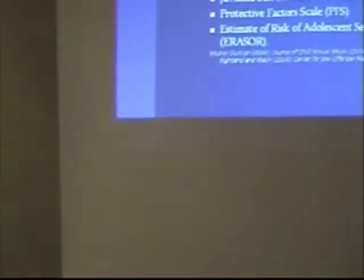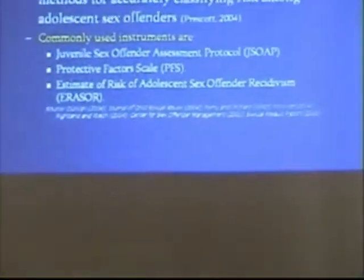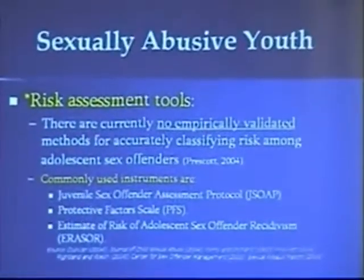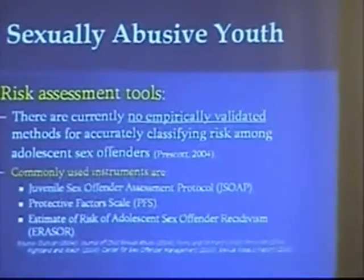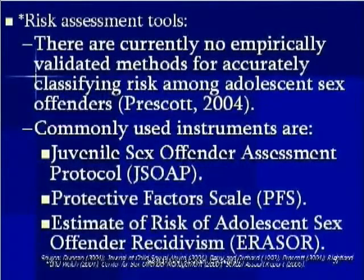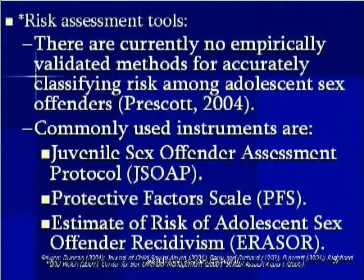Risk assessment tools — however, there are no empirically validated methods for accurately classifying risk among adolescent sex offenders. Three of the more common ones that are used, even though they're not empirical, are the JSOAP, the PFS, and the ERASOR. You can get any of those. I like the JSOAP in particular as part of the interview process, and I also like to use the JSOAP to measure effectiveness in treatment.